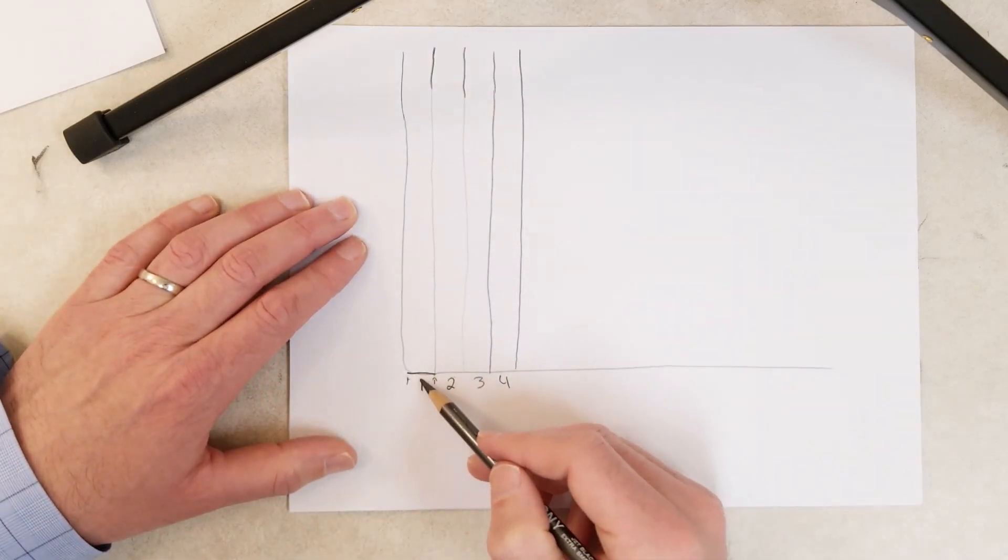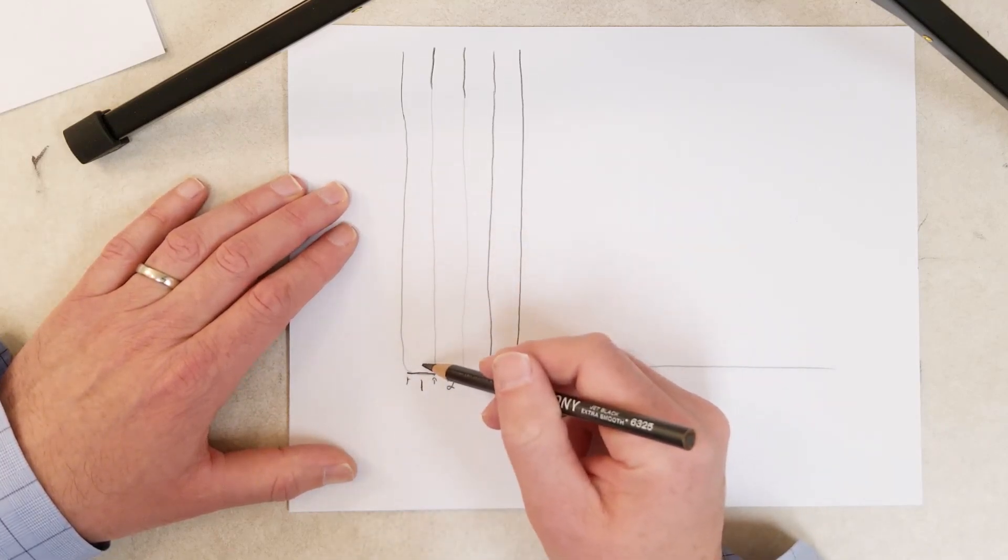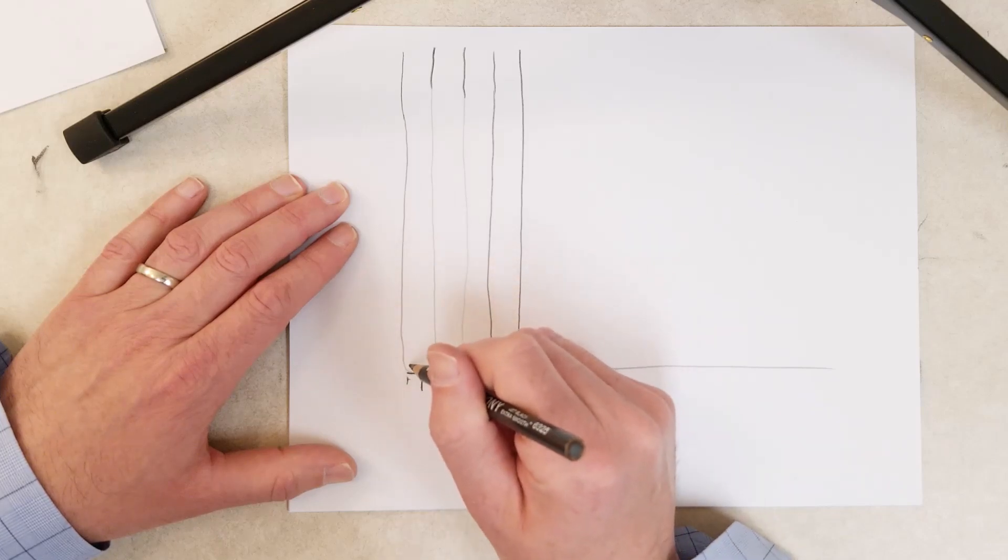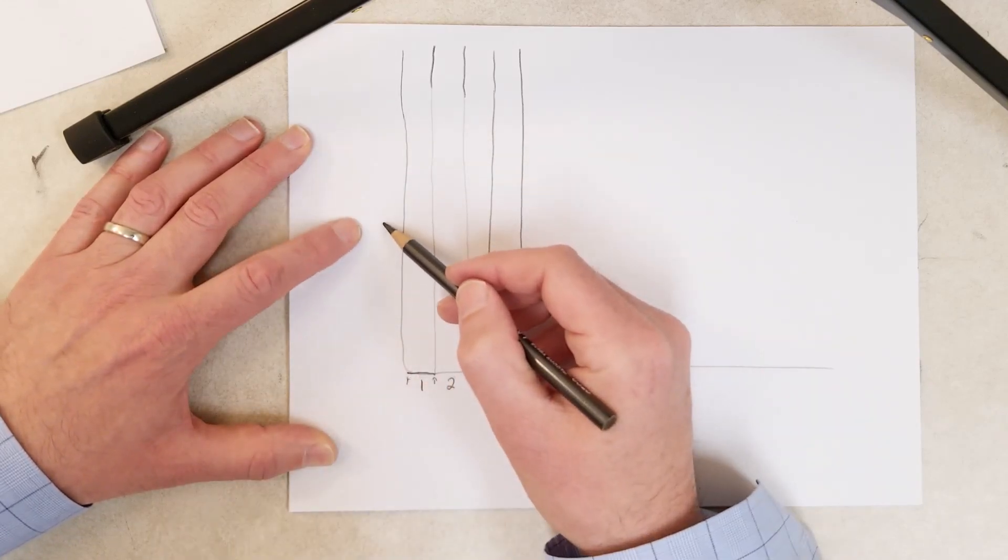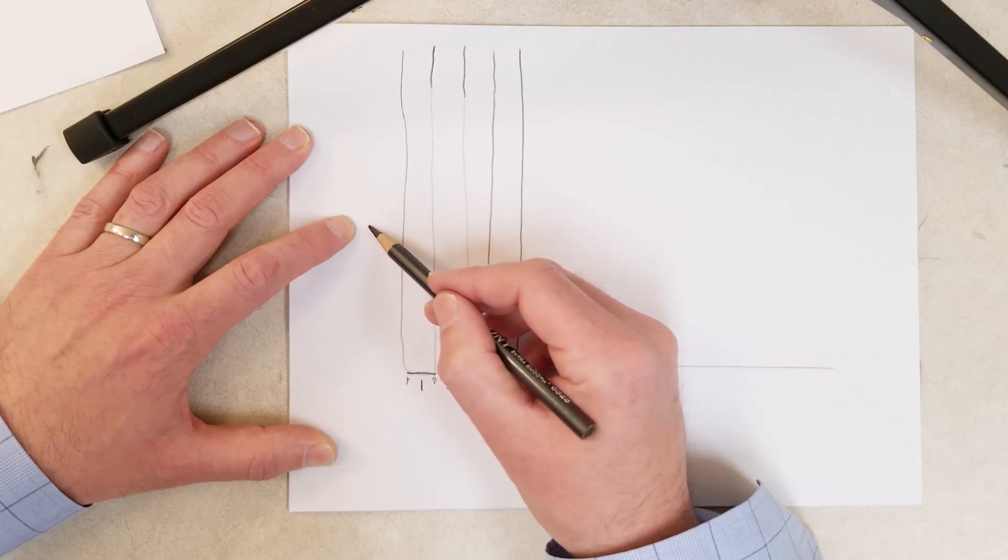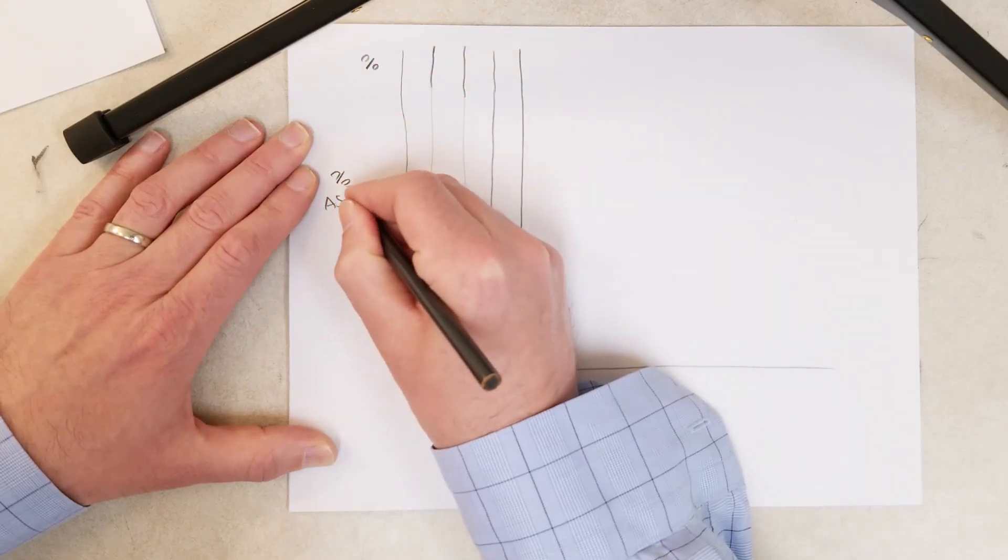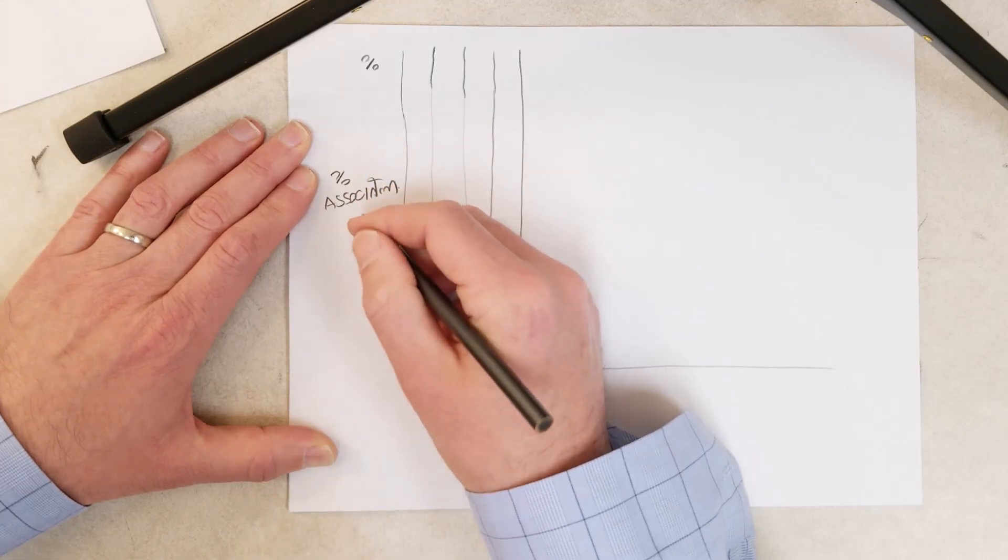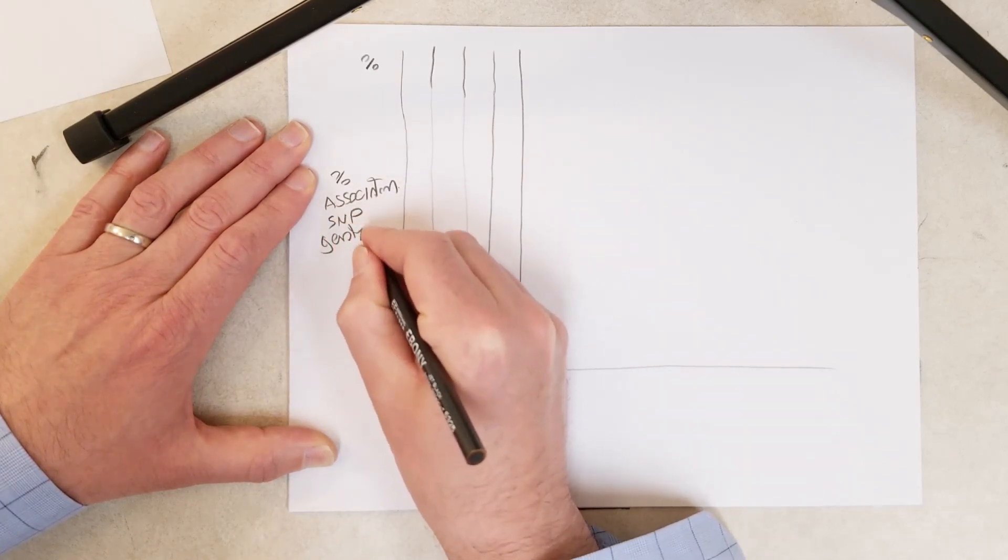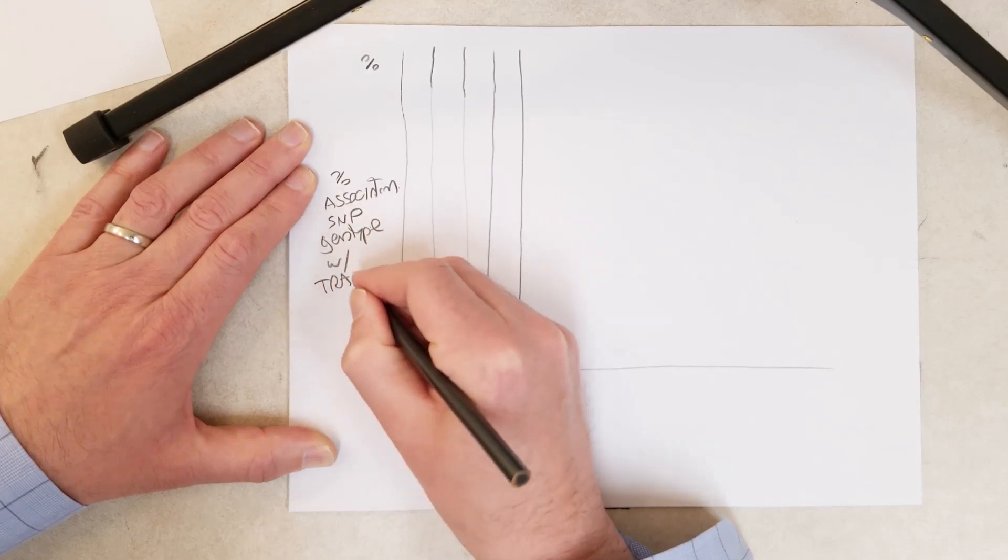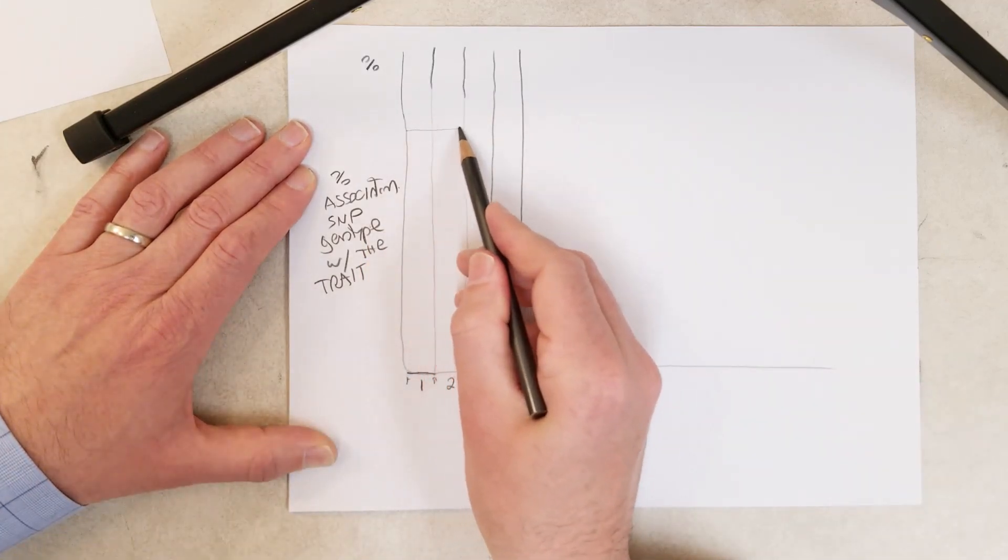We have two alleles for each position because we have two chromosome 1s, two chromosome 2s, 3s and 4s. You use some statistics to correlate where that point is going to go based on both alleles. On the y-axis, this is going to be the percent association of an SNP genotype with the trait, whether it be a phenotype or a genetic disorder. We'll have a significance line right here.